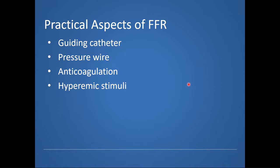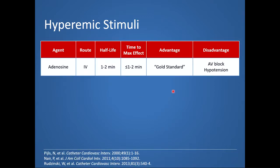Now we should move on and talk about the hyperemic stimulus. Hyperemia and vasodilation of the microvasculature are mediated through adenosine and the A2A receptor. IV adenosine is the most commonly used agent during FFR and is considered the gold standard. This is because it has a half-life of one to two minutes, allowing adequate time to perform a pullback maneuver under maximal hyperemia. It should be administered ideally through a central venous catheter at a dose of at least 140 micrograms per kilogram per minute.